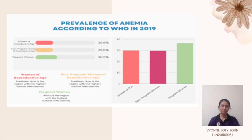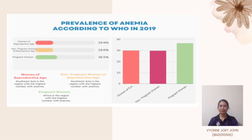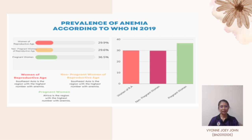Here is the prevalence of anemia according to the World Health Organization in 2019. Around 29.9% of people with anemia are women of reproductive age, 29.6% are non-pregnant women in reproductive age, and 36.5% are pregnant women. According to WHO, the region with the highest number of anemia for women of reproductive age and non-pregnant women of reproductive age is Southeast Asia, while for pregnant women, the region with the highest number is Africa.